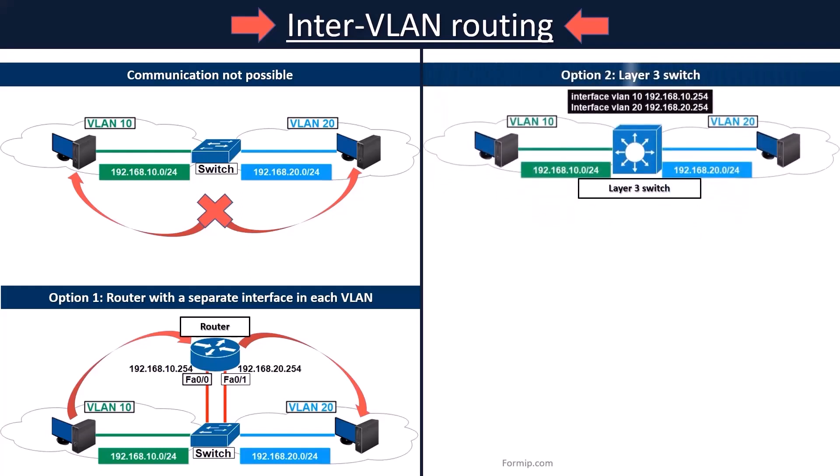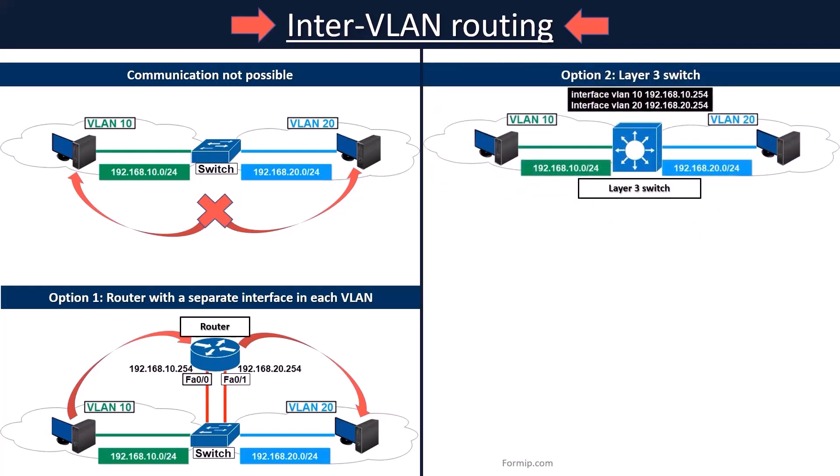Another solution is to use a Layer 3 switch. Some switches can perform Layer 3 functions, which replaces the router, as a Layer 3 device can perform inter-VLAN routing. Traditionally, a switch is a Layer 2 device — it examines the Layer 2 header where there are MAC addresses to route packets. And the router examines Layer 3, where there are IP addresses to carry out the routing.